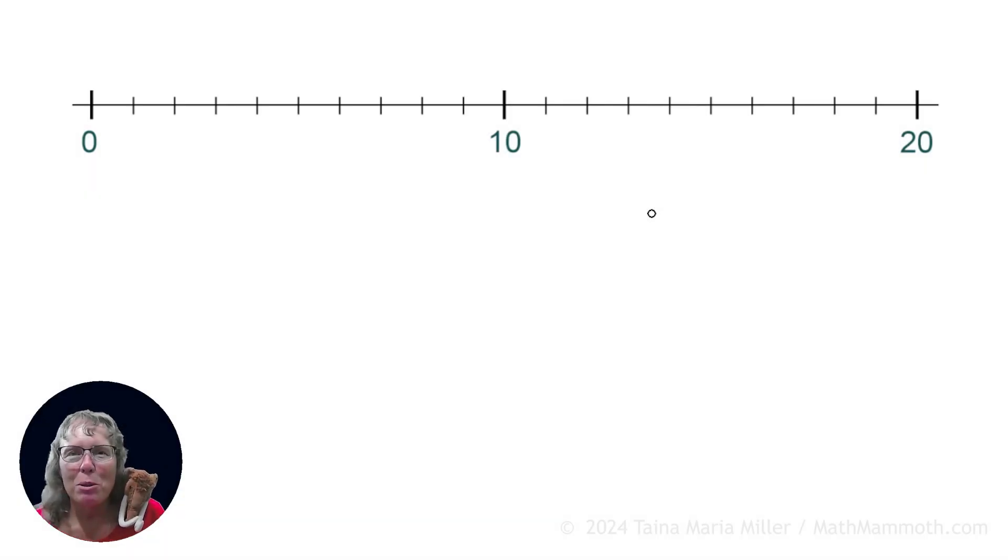All right, now we will look at another special case. And that is numbers that are between 0 and 10. When you count by 10s, don't you go 0, 10, 20, 30, 40, right? 0 is actually one of the whole 10s, or one of the multiples of 10.